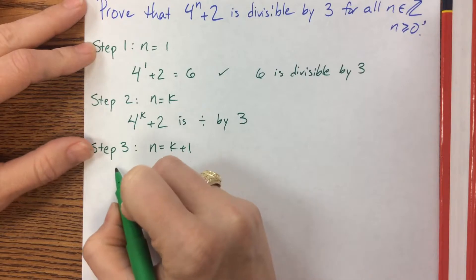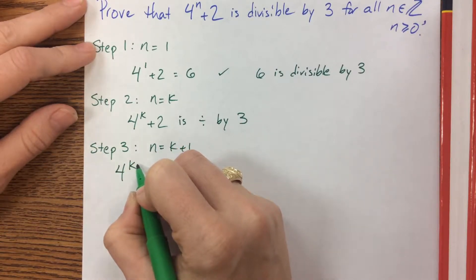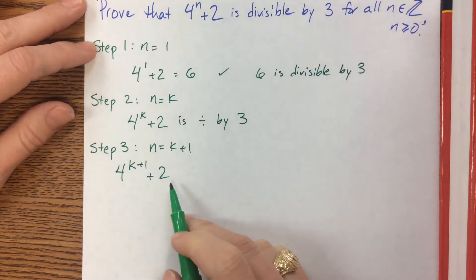I'm just thinking through this problem for the first time as I video it. So I have 4 to the k plus 1 plus 2.